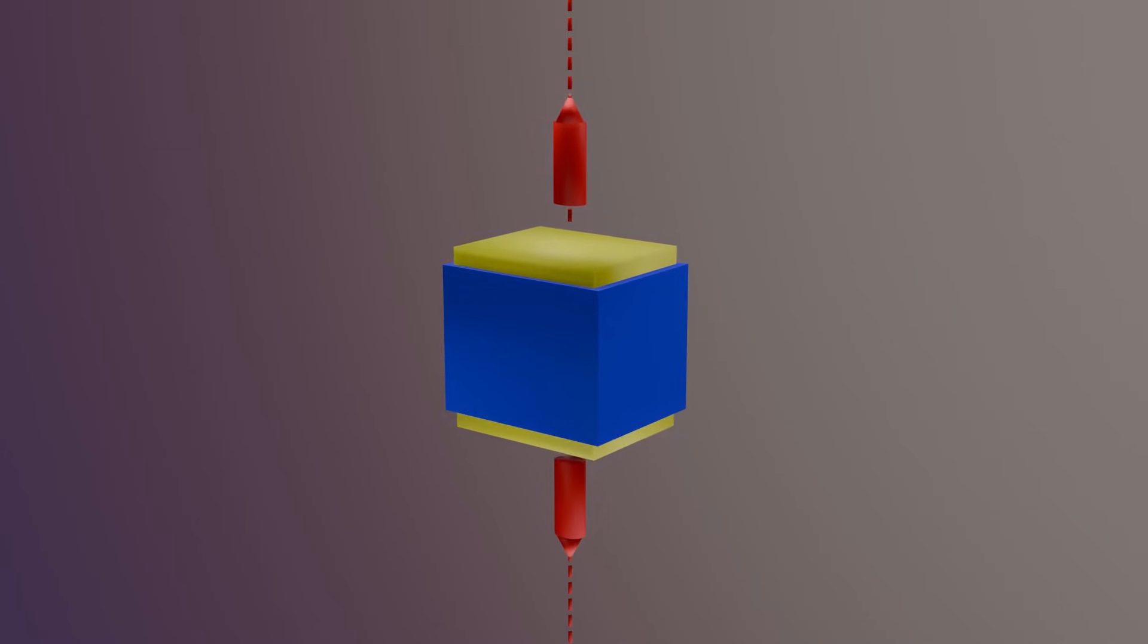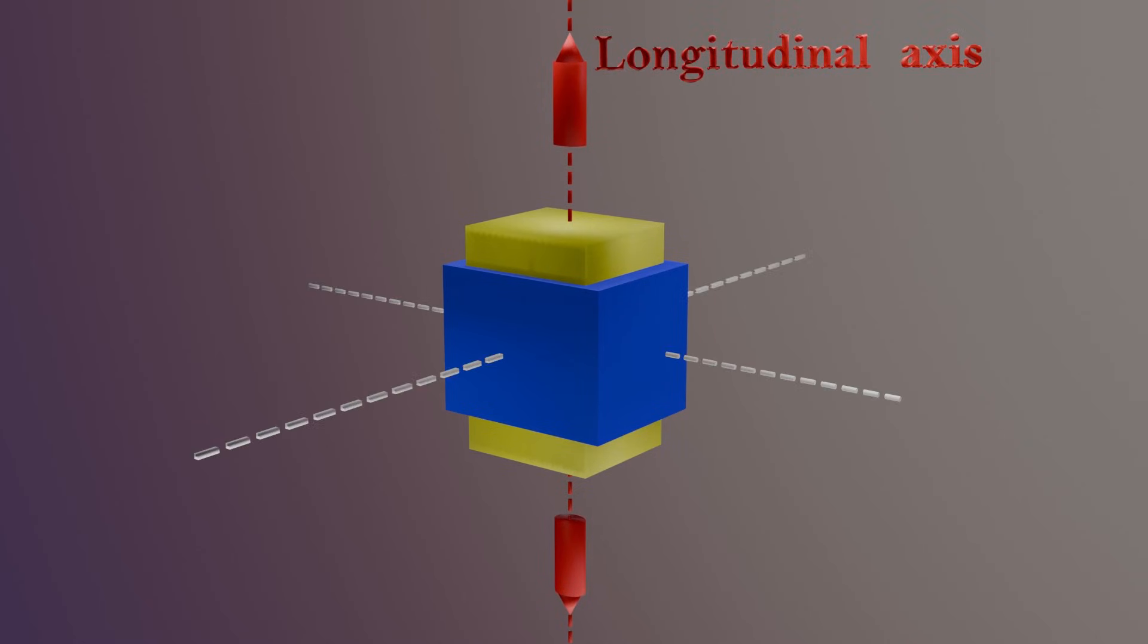If we reverse the direction of the load and apply a tensile force, the cube will stretch in one direction and contract in the other two directions. The key idea here is that when a material deforms in one direction, it also deforms in the perpendicular directions.